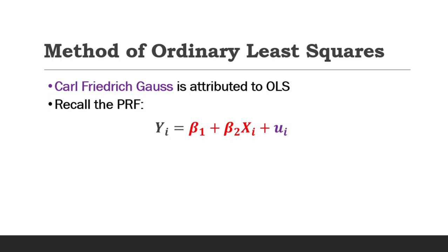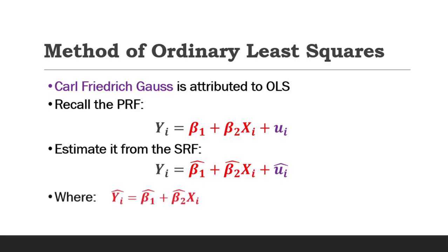The sample regression function is therefore given by yi equals beta1 hat plus beta2 hat xi plus ui hat, where beta1 hat plus beta2 hat xi is the estimated or conditional mean of y, yi, noted as yi hat.